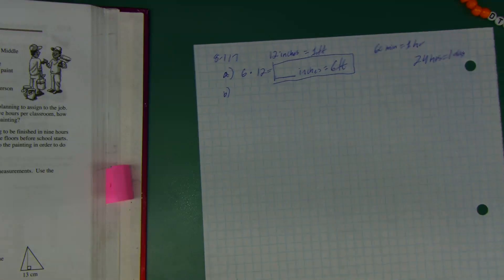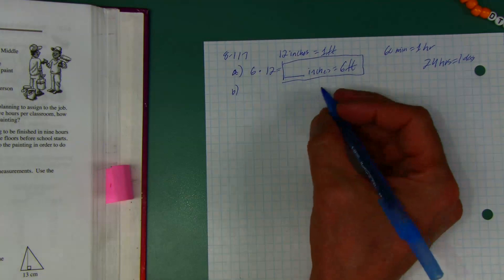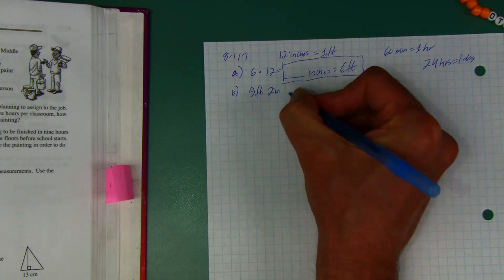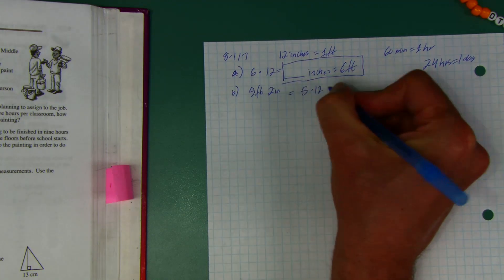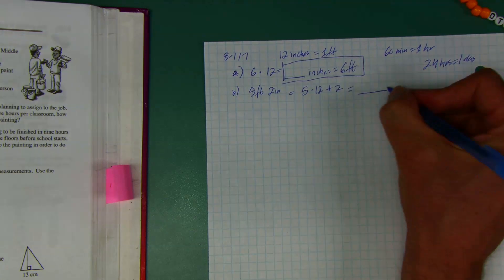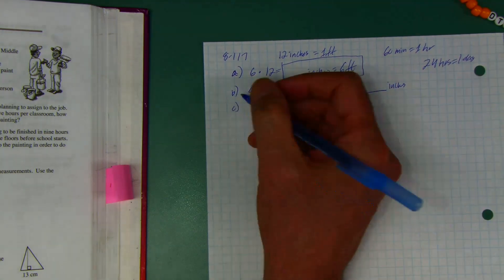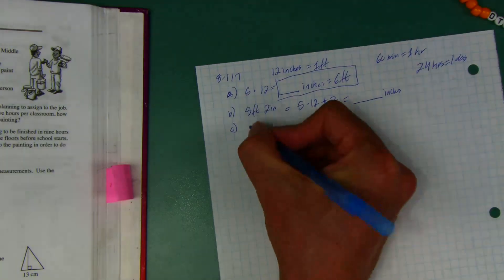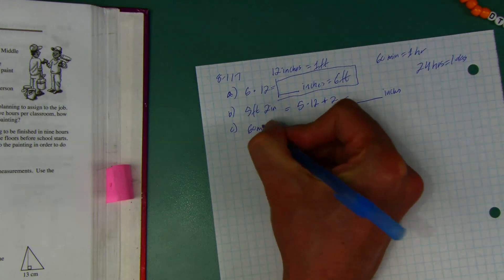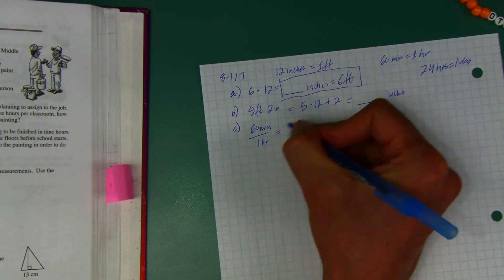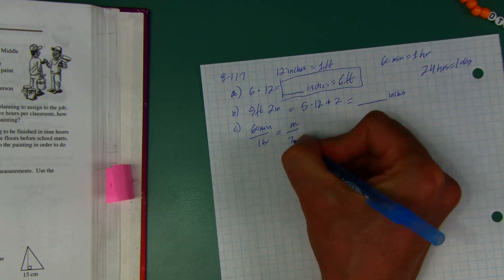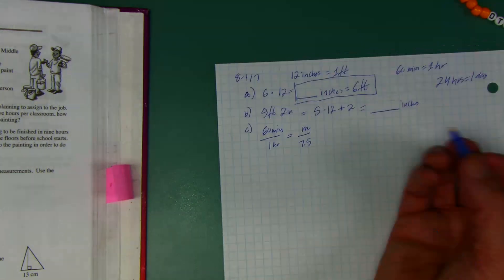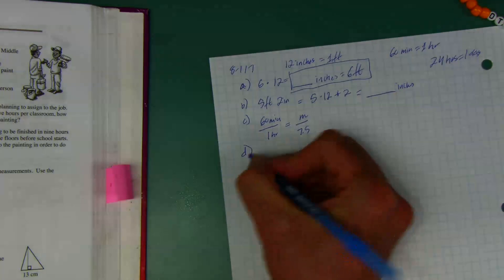Part b: how many inches are in five feet two inches? You do five times 12 plus two to get the total inches. Part c: how many minutes are in seven and a half hours? Set it up as a proportion — 60 minutes per one hour equals m minutes per 7.5 hours — then cross multiply. It's going to be 7.5 times 60.